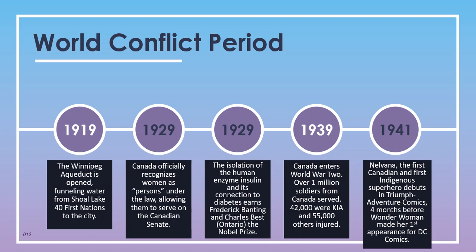In 1939, Canada entered World War II — over 1 million soldiers from Canada served, 42,000 were killed in action, and 55,000 others were injured. In 1941, Nelvana, the first Canadian and first indigenous superhero, debuted in Triumph Adventure Comics, appearing four months before Wonder Woman made her first appearance for DC Comics.